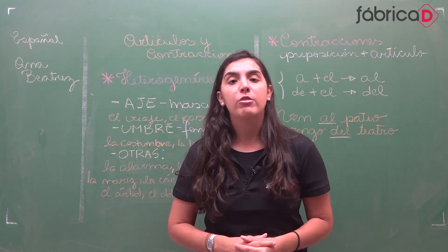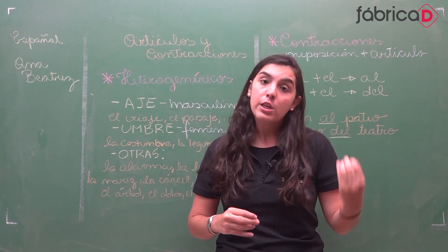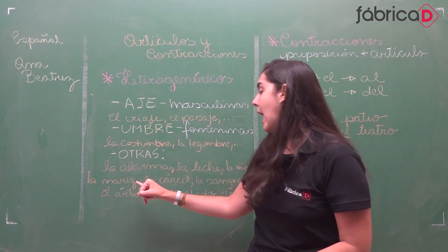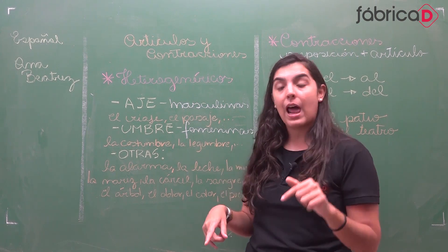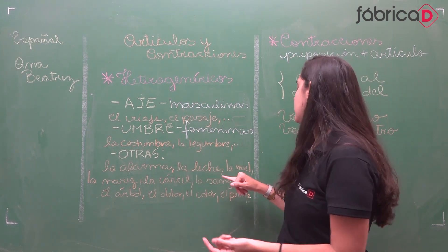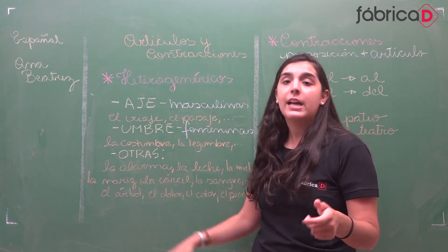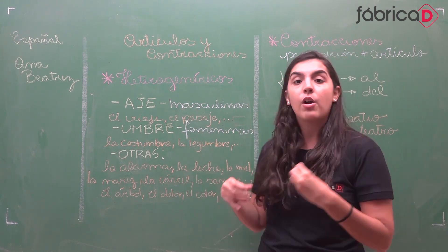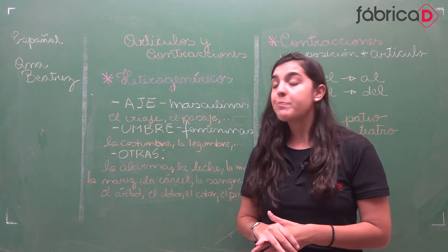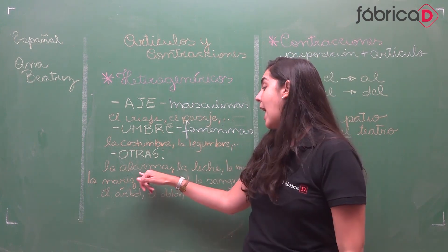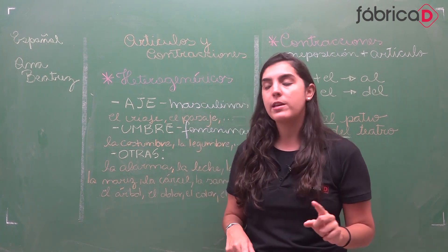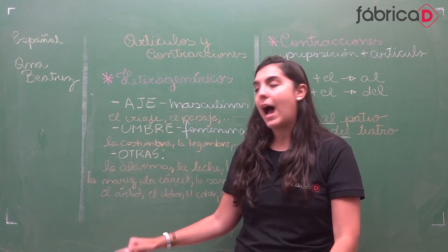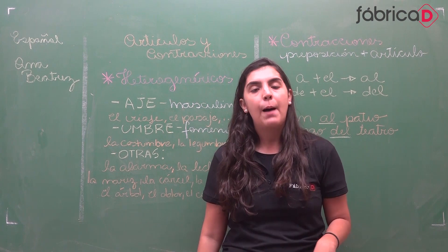Para terminar a parte de heterogenéricos, temos outras palavras que mudam muito o gênero do português para o espanhol. Femininas: 'la alarma' — o alarme; 'la leche' — o leite; 'la miel' — o mel; 'la nariz' — o nariz; 'la cárcel' — o cárcere; 'la sangre' — o sangue. Chamo atenção para 'la alarma' — não é caso de cacofonia porque a sílaba forte é 'lar', não o 'a'. Se fosse esse 'a' tônico, teria que ser 'el alarma' pelo caso da cacofonia.